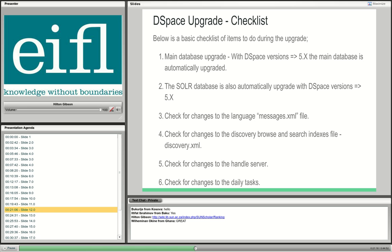Continuing with DSpace: the checklist of what gets upgraded and what to check. Normally the database schema upgrades had to be run manually. But now with DSpace 5 and newer versions, the database schemas are automatically upgraded — a fantastic new feature of DSpace 5.5. This means theoretically you can upgrade from DSpace 1 to DSpace 5 and all the complicated migration scripts that run per version are done automatically for you.